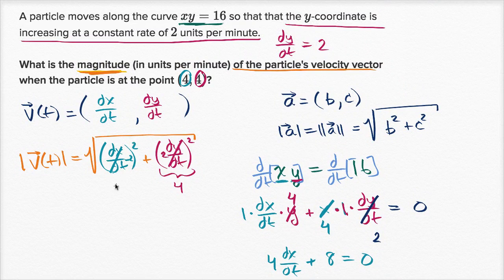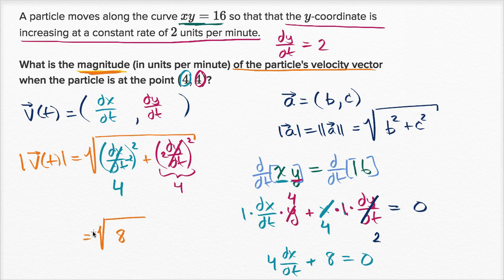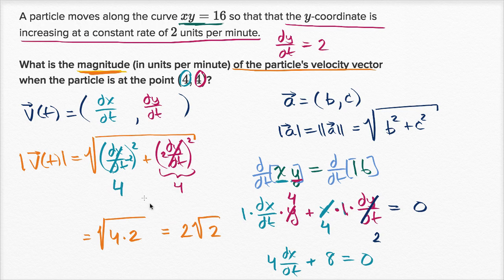When all this is going on, the rate of change of x with respect to t is negative two. Squaring it gives four. So the magnitude of our velocity vector is equal to the square root of four plus four, which is the square root of eight, the same as the square root of four times two. This equals two square roots of two units per minute — that's the magnitude of the velocity vector.